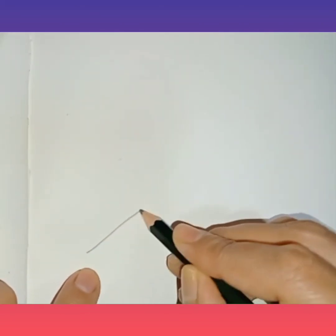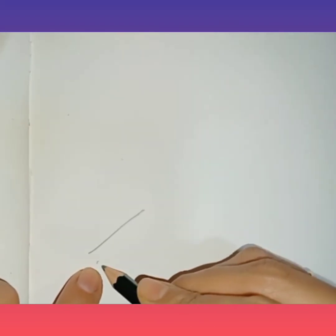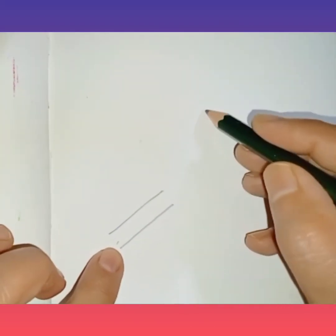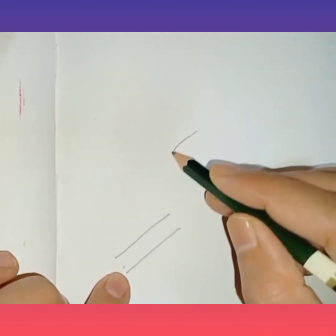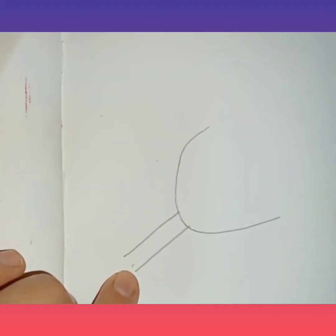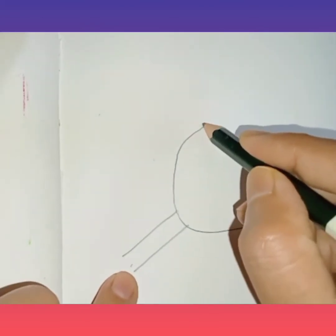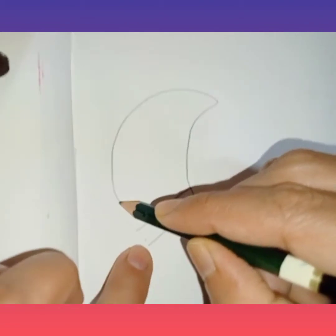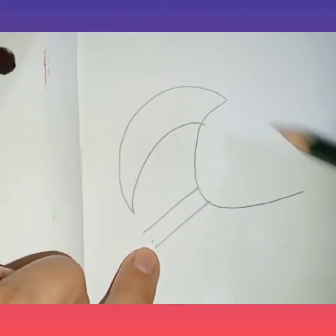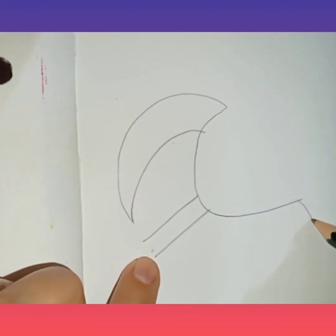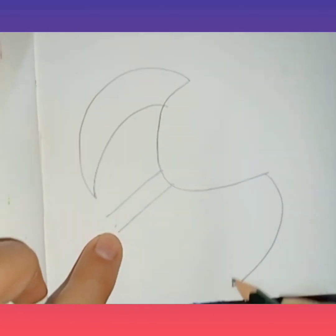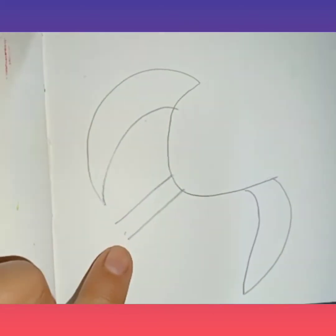So first from here you will make two slanting lines. Okay? Then make a curve like this. Right? And then make a curve like this, and also on the other end. Done?